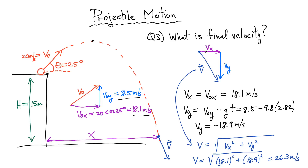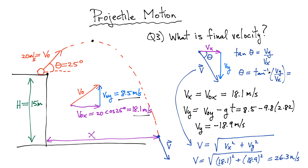To fully define the total velocity vector, we know the magnitude, but if you also want the angle, you can use tangent. The tangent of the angle equals Vy over Vx, so theta equals the inverse tangent. Substituting Vy = 18.9 and Vx = 18.1, you get 46.2 degrees — that's the angle with respect to the horizontal.